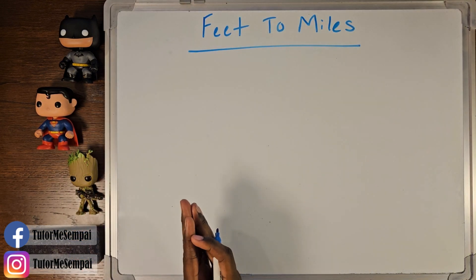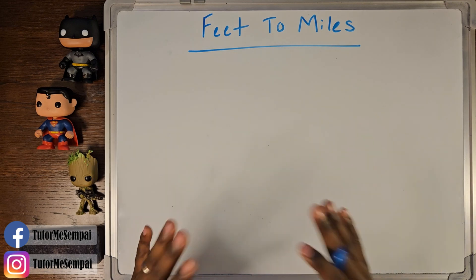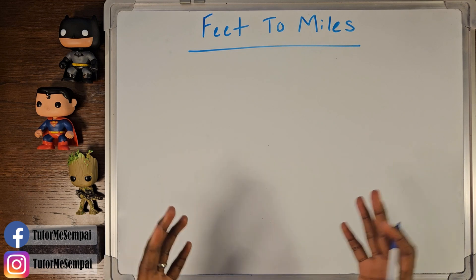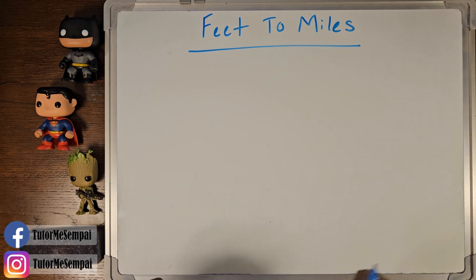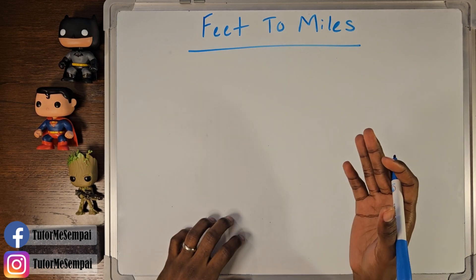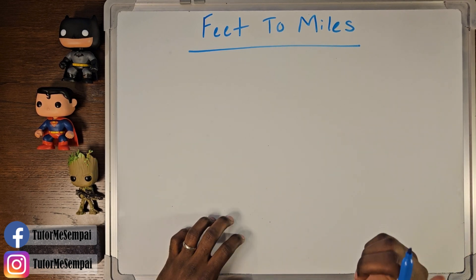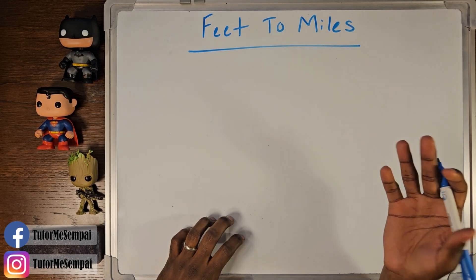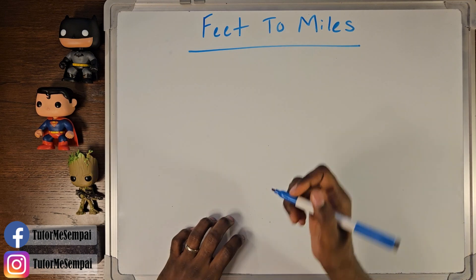Today we're going to do some unit conversions from feet to miles and from miles back to feet. But just like we did in our other videos on unit conversions, we need to start with our basic unit conversion for this exercise. So the basic unit conversion for feet to miles is really just asking us how many feet are going to be in a single mile. Once we know that, we can do all of our conversions from feet to miles and miles back to feet.